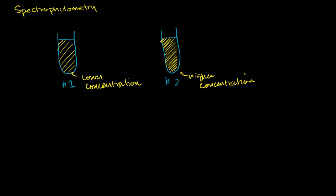Now let's think about what will happen if we shine some light through each of these beakers. We are shining at a wavelength of light that is specifically sensitive to the solute dissolved in here. So let's say I have some light here of some intensity — the incident intensity, I'll call it I0. What's going to happen as the light exits the other side of this beaker? Well, some of it is going to be absorbed. Some of this light at certain frequencies is going to be absorbed by our little molecules inside the beaker. So you're actually going to have less light coming out from the other side. I'll call this I1.